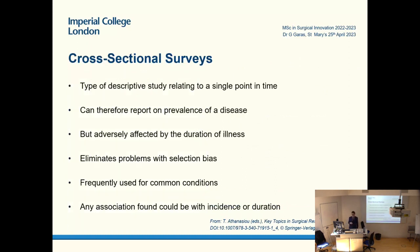Moving on to cross-sectional studies: these are descriptive studies that look at a specific point in time. They are very good for common diseases to assess prevalence. The limitation is that any association you find may have to do with the disease or with the incidence. We'll come back to this shortly.